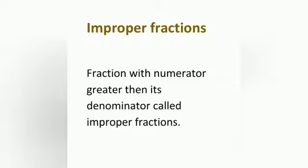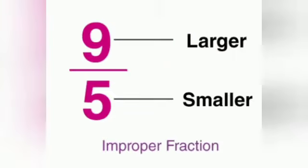Improper fractions are fractions with a numerator greater than the denominator. For example, nine by five: nine is larger and five is smaller. Thank you.